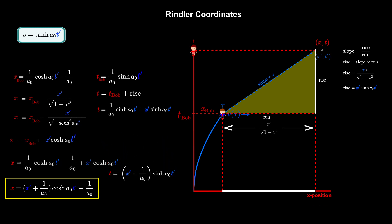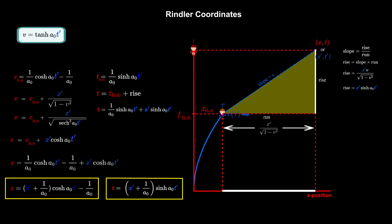X' and t' in these two equations are called Rindler coordinates. They are Bob's rest-frame coordinates. These two equations describe the relationship between the rest-frame coordinates of an observer undergoing constant rest-frame acceleration and an inertial observer.